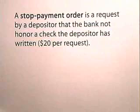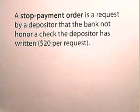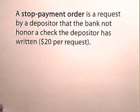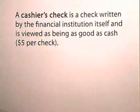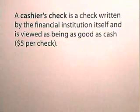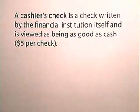A stop payment order is a request by a depositor that the bank not honor a check that the depositor has written — $20 per request. A cashier's check is a check written by the financial institution itself and is viewed as being as good as cash — $5 per check.